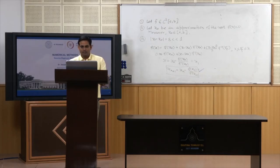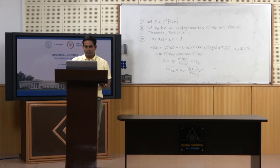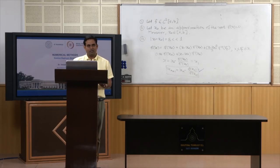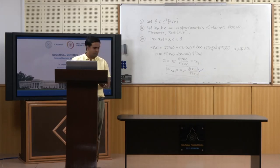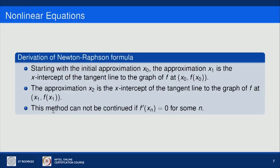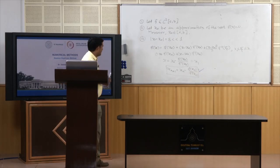We start with an initial approximation x₀, then we find x₁ which is the x-intercept of the tangent line to the graph of f at the point (x₀, f(x₀)). Then similarly we find x₂, the x-intercept of the tangent line to the graph of f at x₁, and finally this method continues finding the approximate numerical solution x* where the sequence converges. Let us take a very simple example.